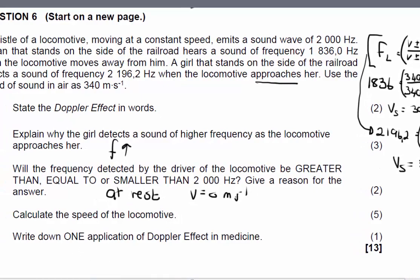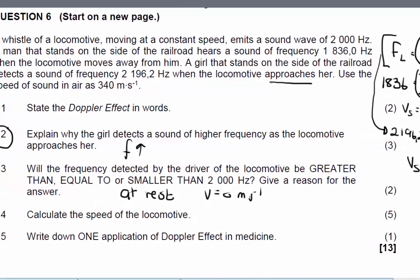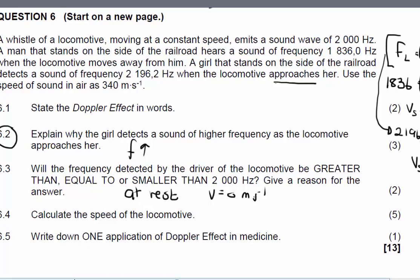The last question, write down one application of the Doppler effect in medicine. Here you can say it's used in flow meters in medical science to measure the speed and the direction of blood flow or the movement of the heart of the fetus. In other words, the Doppler flow meter. It's also used in ultrasound scanning to see the unborn child, and ultrasound scanning is used to hear the heart of the fetus.